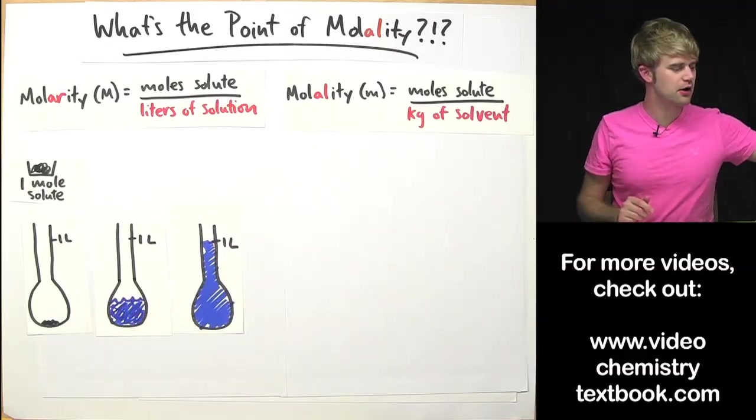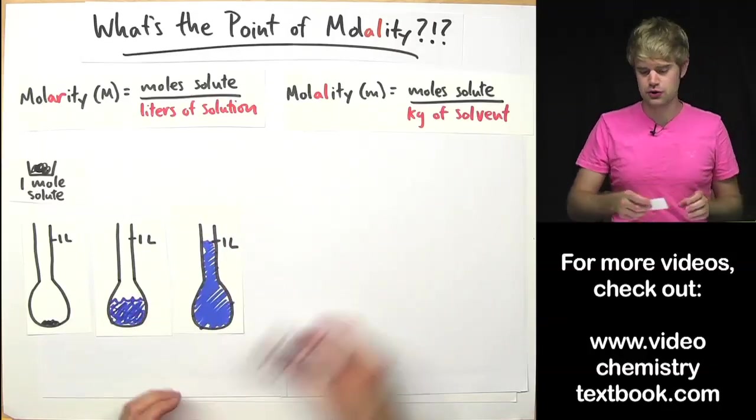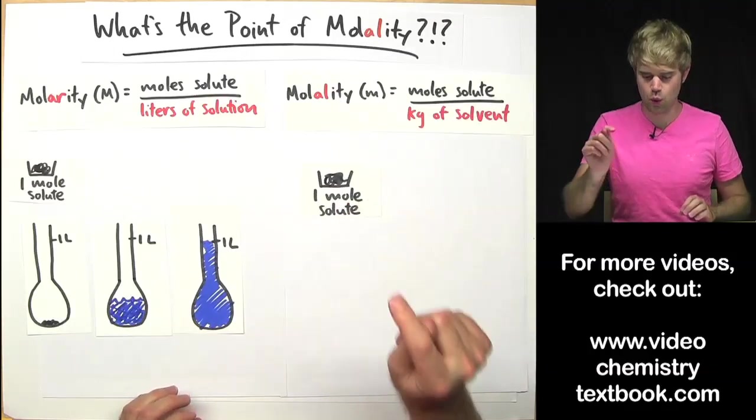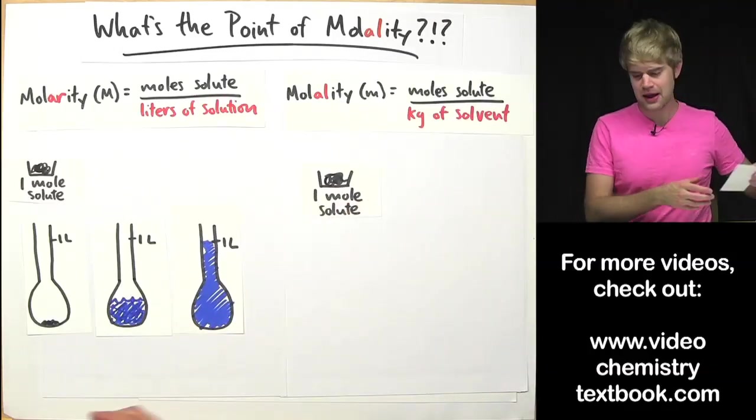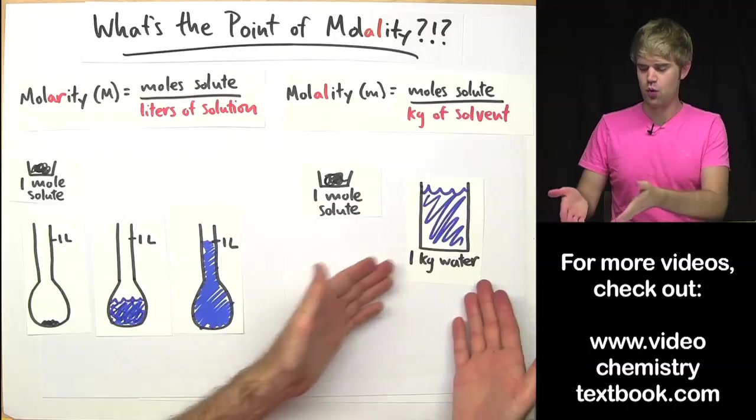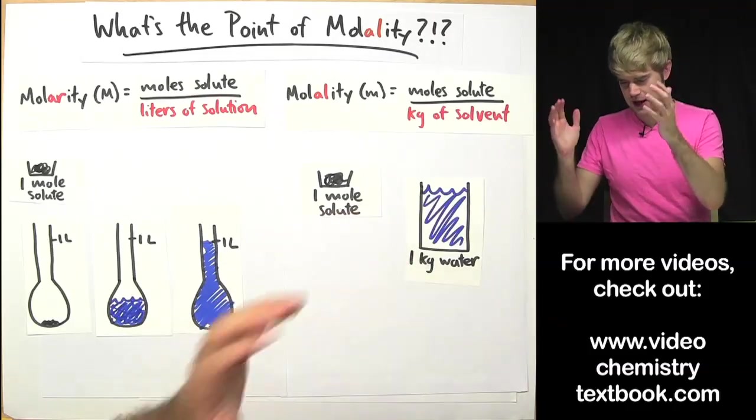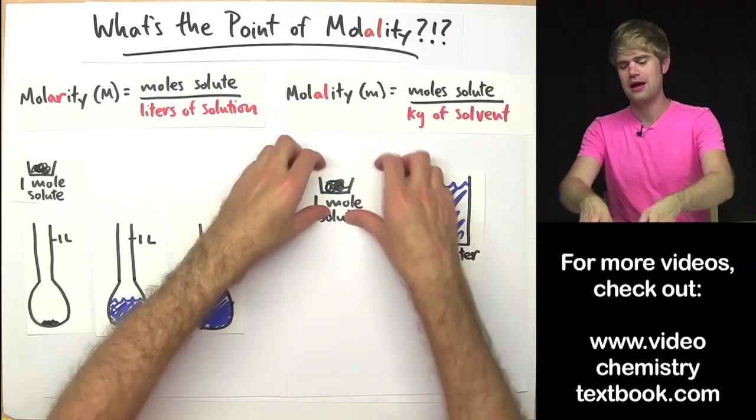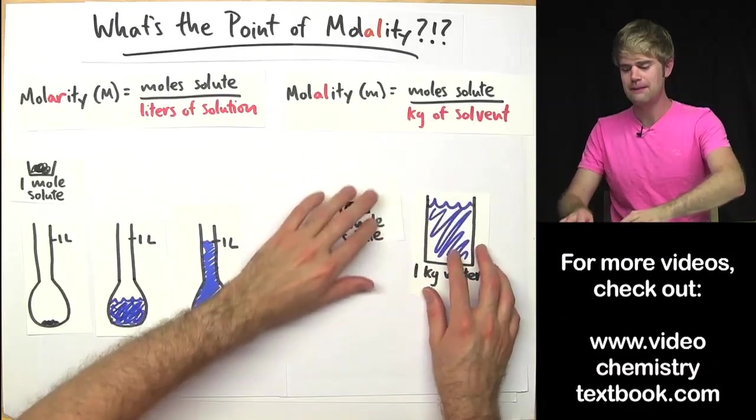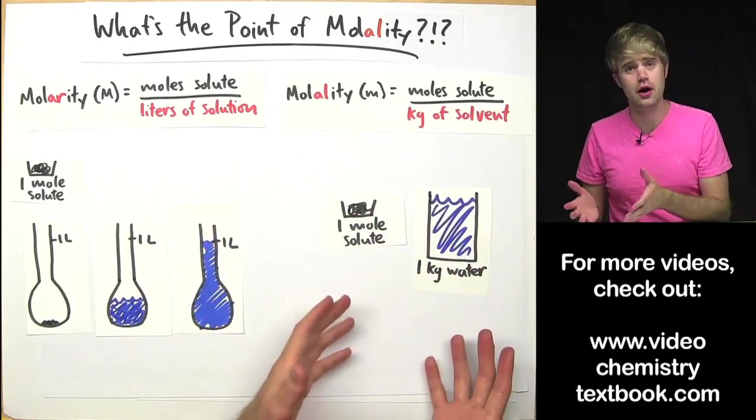On the other hand, to make a one molal solution, all I got to do is take one mole of solute, I weigh that out, and then I put a big bucket with water on it, on a scale or something, and weigh out one kilogram of water and then I just pour in the solute and mix them together. That's all you got to do.